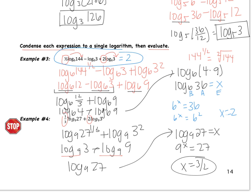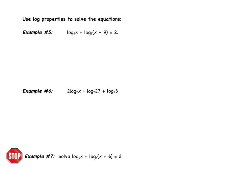That was the first objective — condensing and evaluating using properties. Now we're going to use those properties to solve logarithmic equations. In example 5, we have two logs on the left side and no log on the right side. We can't switch to exponential form with two logs, so we need to get one log on the left first. Check: we have log base 6 and log base 6 — same base, we're adding, so multiply the arguments. This becomes log base 6 of x times (x minus 9) equals 2, which gives log base 6 of x squared minus 9x equals 2.